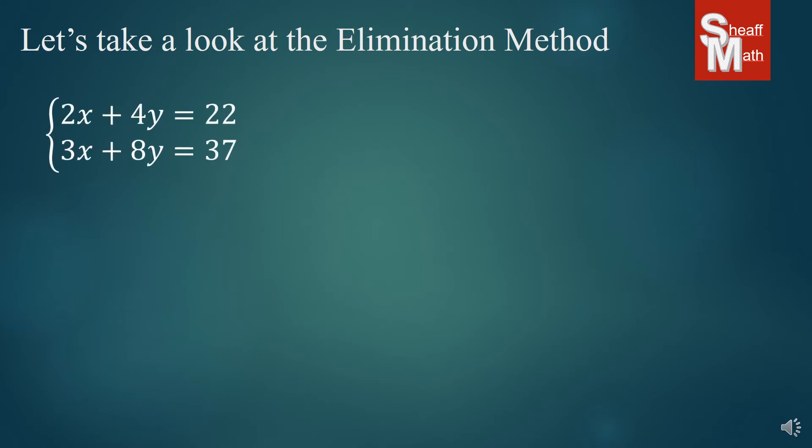Now, I want you to take a look at this equation, or the system right here. If we add these together, do any of them eliminate? Well, the x's will turn into 5x, and the y's will turn into 12y. And so, that's a problem. We can't do the elimination method if we don't eliminate. So, what we're going to do is, we're going to change an equation.